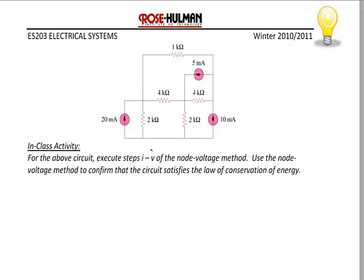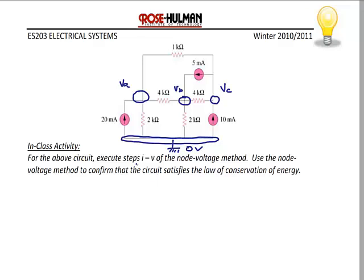Let's get started with an example circuit. The first thing we do is label the nodes — I always start with ground first. So I label the bottom with the ground symbol. Remember, the reference node ground is always zero volts. Then I label the rest of the nodes. We have a node where four elements come together — we'll name this node VA. Then another node where four elements come together — we'll name this node VB. And over here we have a node where four elements come together — we'll name this node VC.